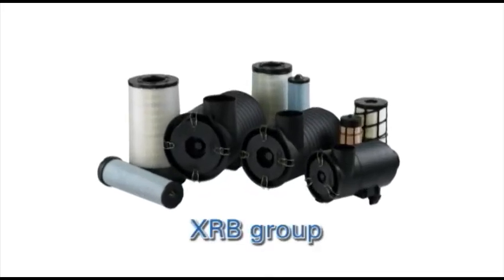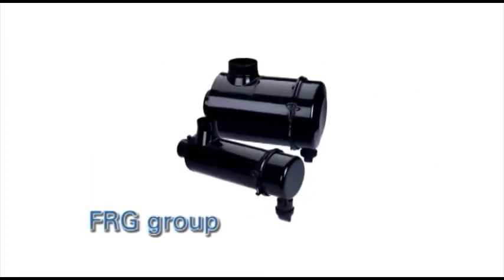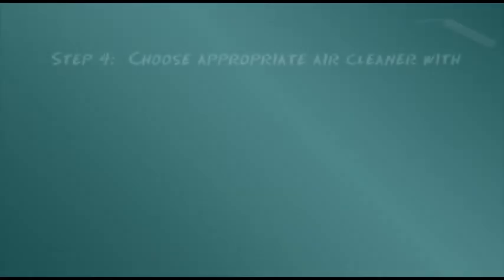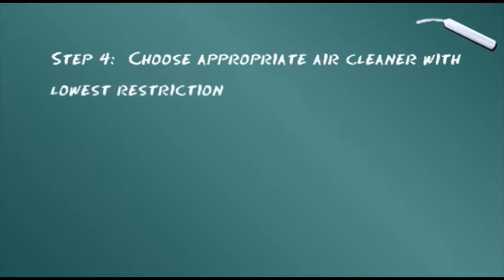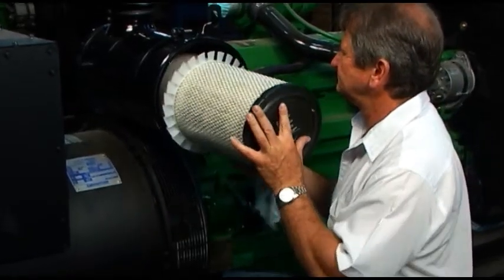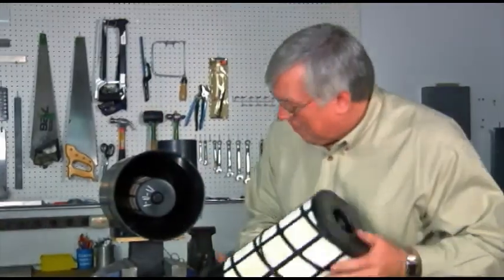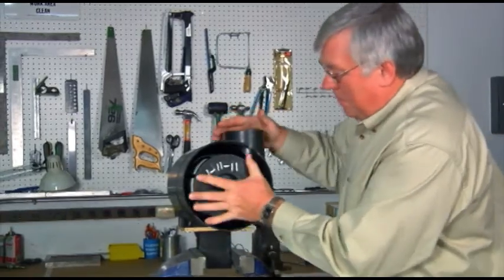Air cleaner dimensions, locations of the inlet and outlet, and mounting configurations are appropriately considered at this step. Using the airflow rate, the fourth step is to narrow your choices within these air cleaner families to the air cleaner model with the lowest restriction values. If there are two air cleaner models that will fit your parameters, choosing the one with the lowest restriction will generally provide the longest filter service life.